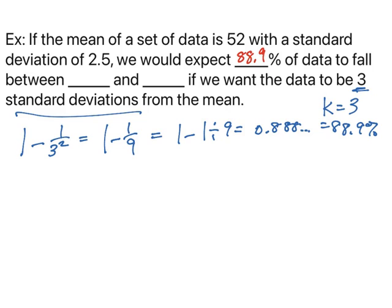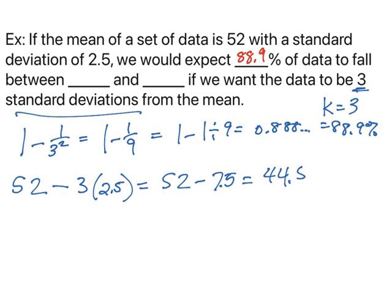Well, if the data value is 52 and I want three standard deviations below the mean, below means I'm going to subtract, and three standard deviations. So I'm going to take three and multiply by the standard deviation, and that's going to give me my lower region. 52 minus 7.5 gives me 44.5. That's this value.